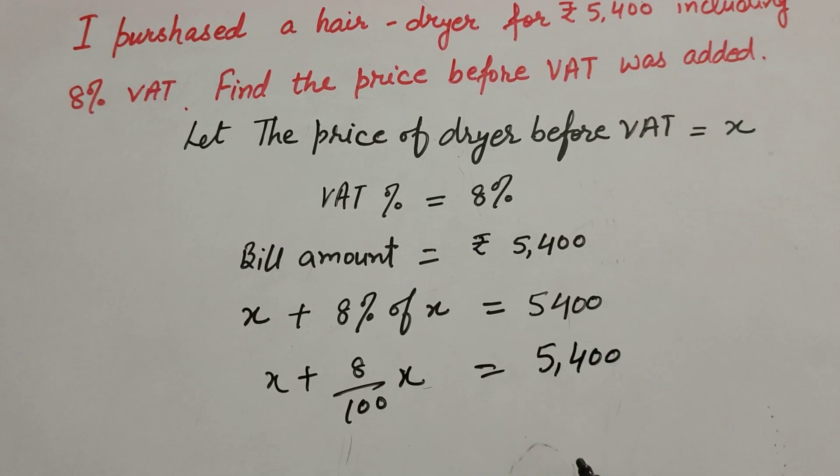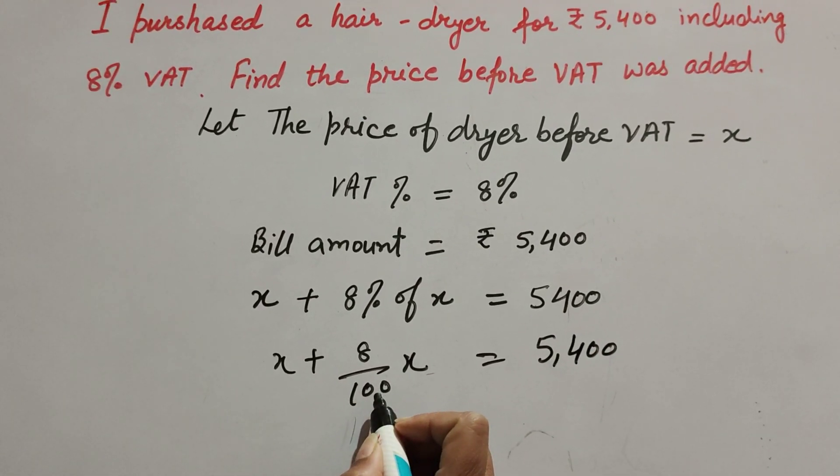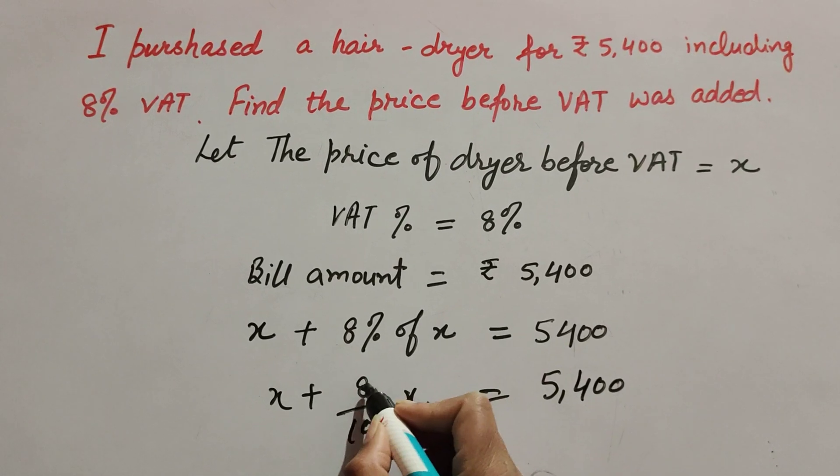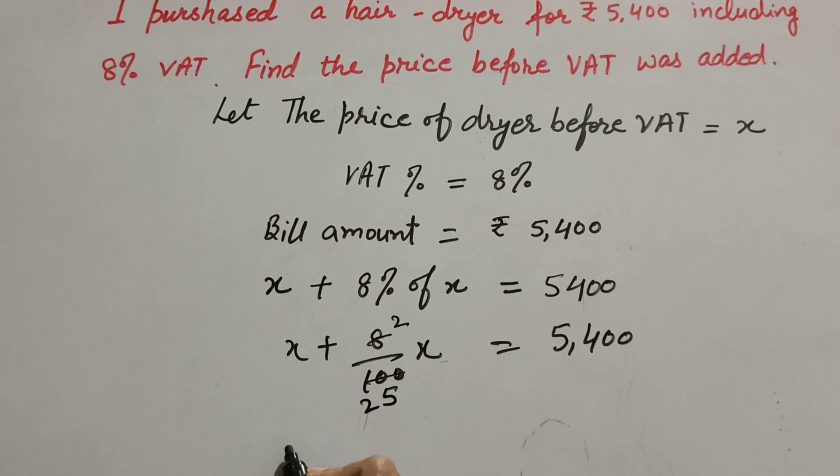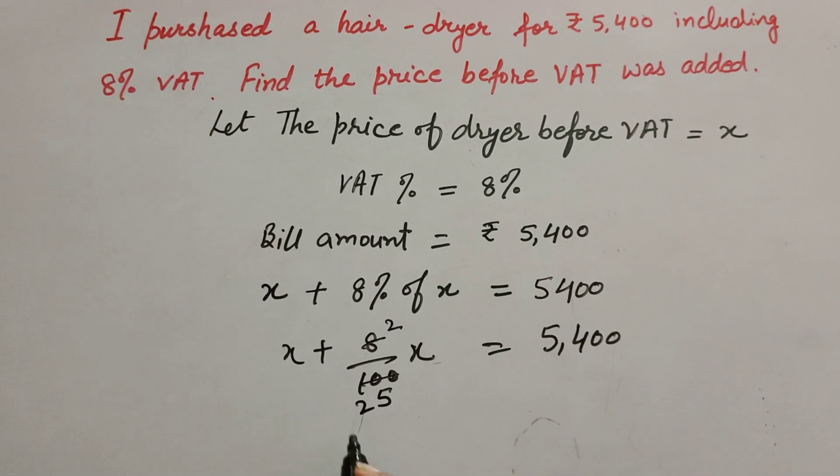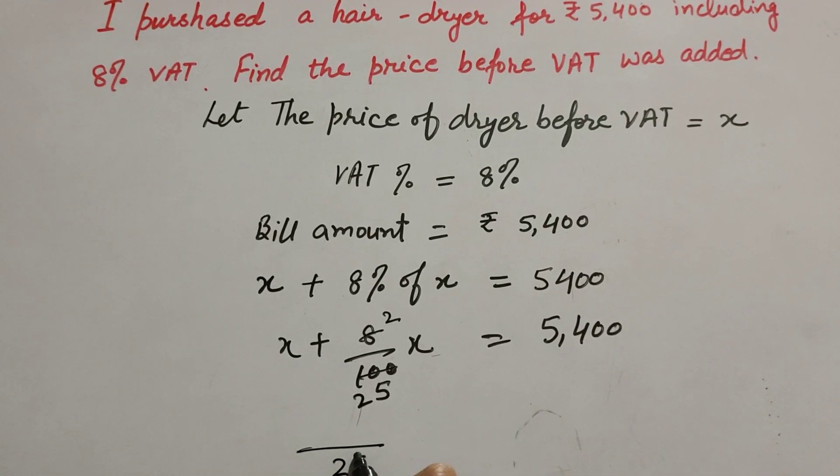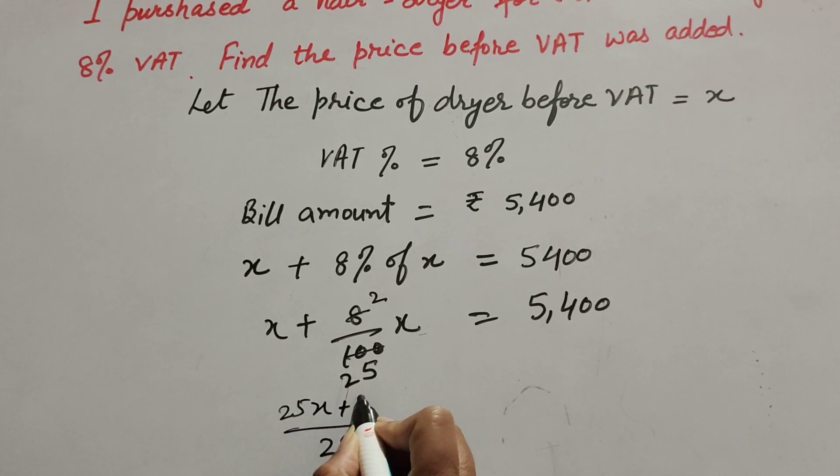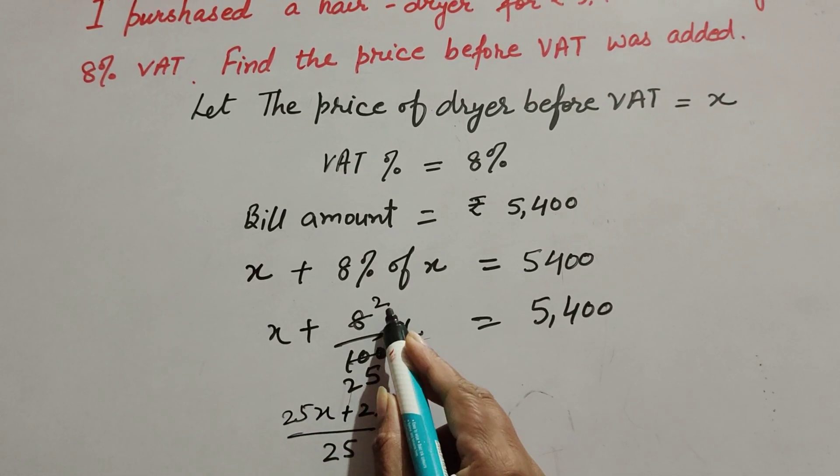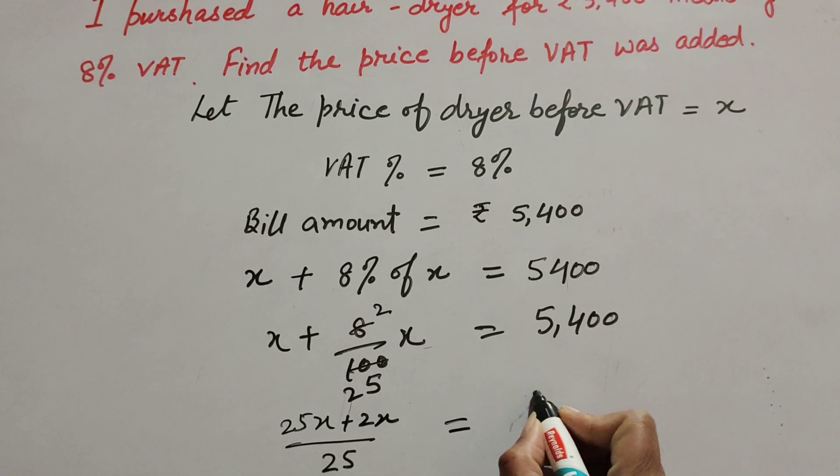Now 8 and 100 are both divisible by 4, so we simplify to get 2/25. Taking LCM as 25, we get 25x plus 2x, which equals 27x. So we have 27x/25 = 5,400.